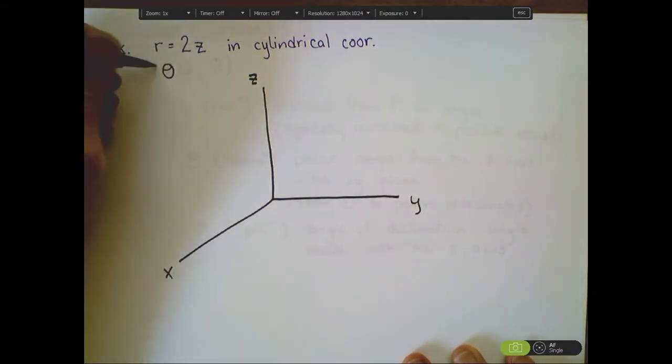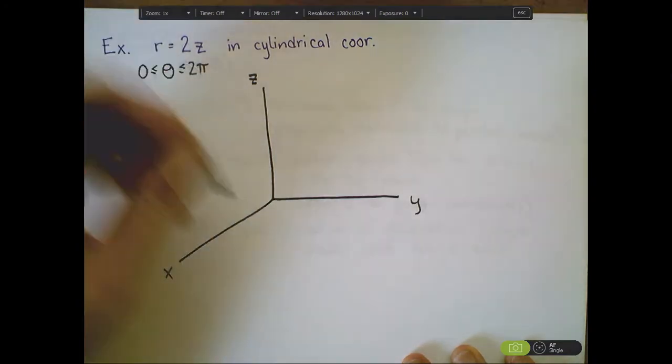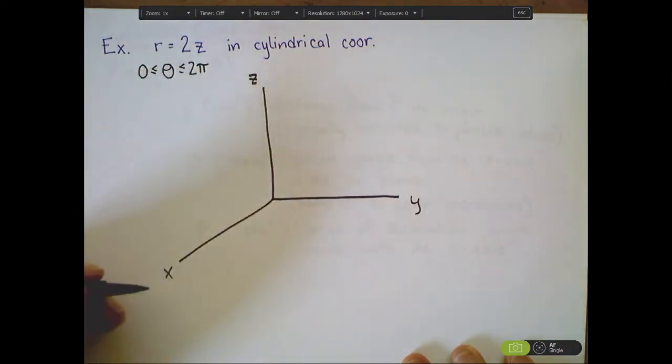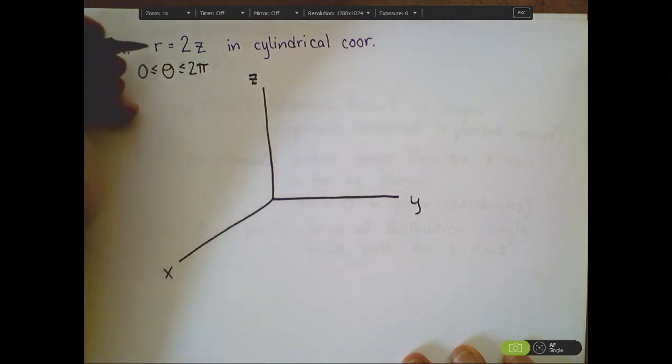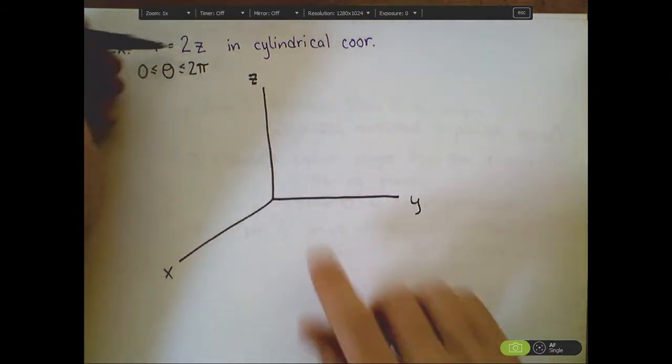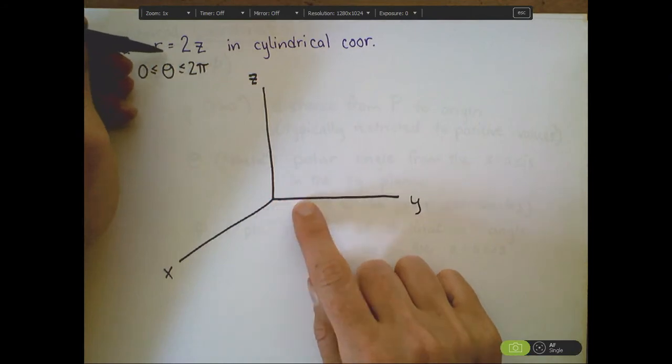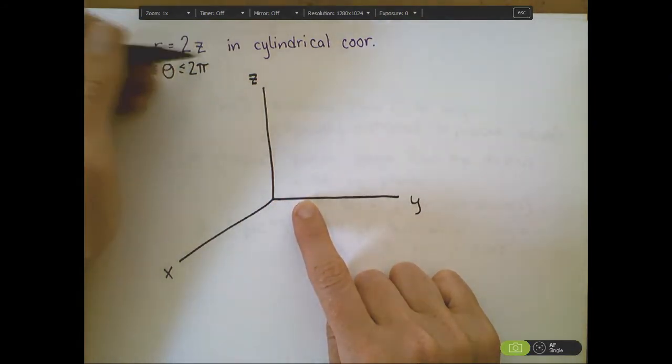So, r equals 2z. Implicit in here, I'm going to let my angle theta go from 0 to 2 pi, meaning that I'm spinning around in a full circle in the xy-plane. And as I trace this out, I see that as my radius increases, my heights, or z-values, are going to increase twice as rapidly.